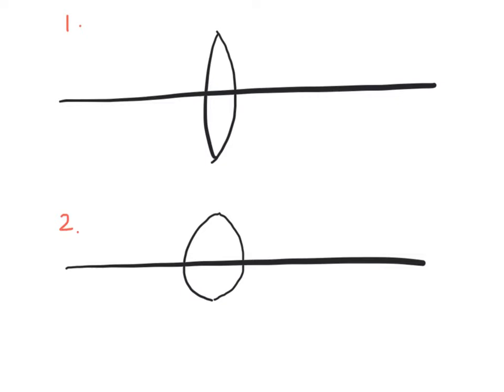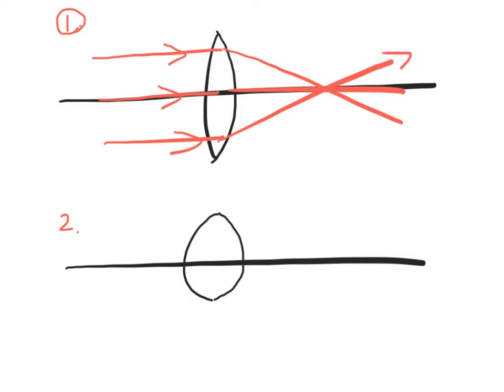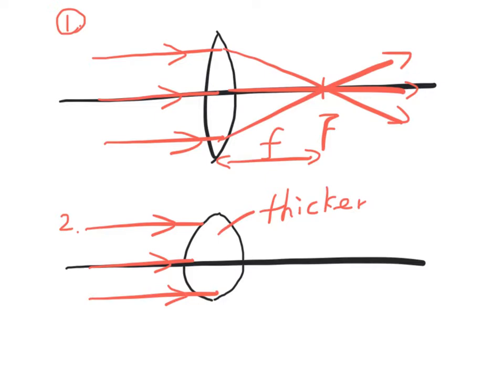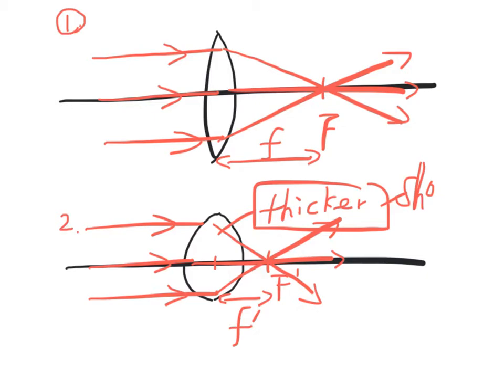The focal length of a convex lens depends on its thickness. For parallel light waves passing through the convex lens, the light waves will converge at the focus with focal length f. For a thicker convex lens, the parallel light waves travelling parallel to the principal axis will converge at a point nearer to the lens. Therefore, a thicker lens has a shorter focal length.